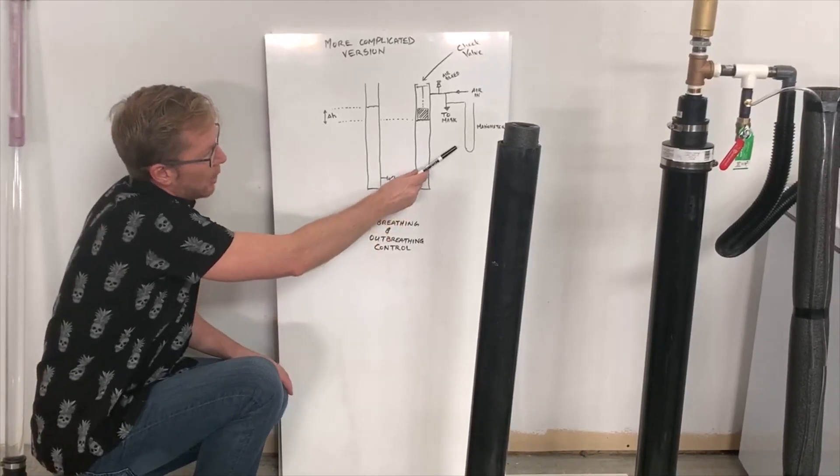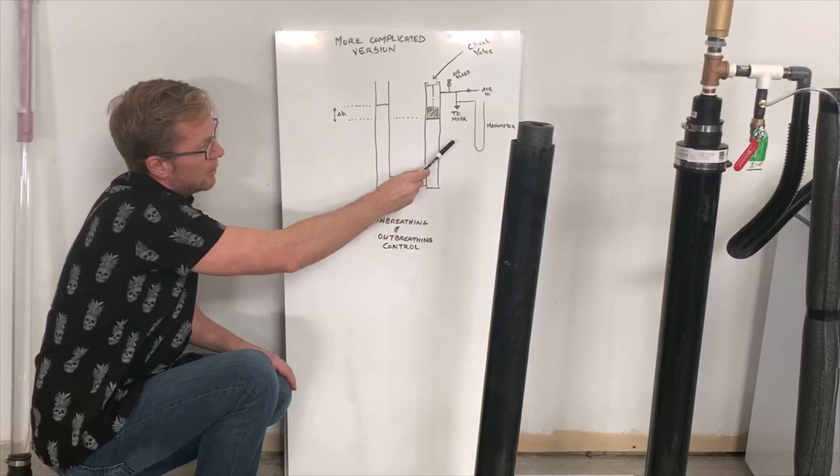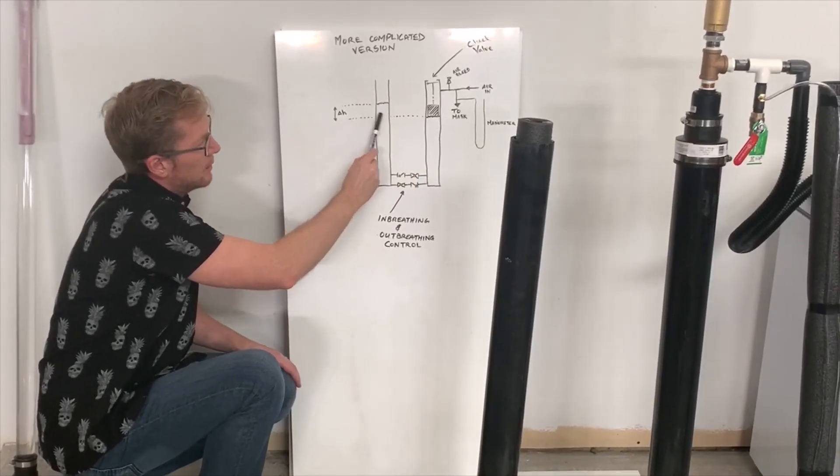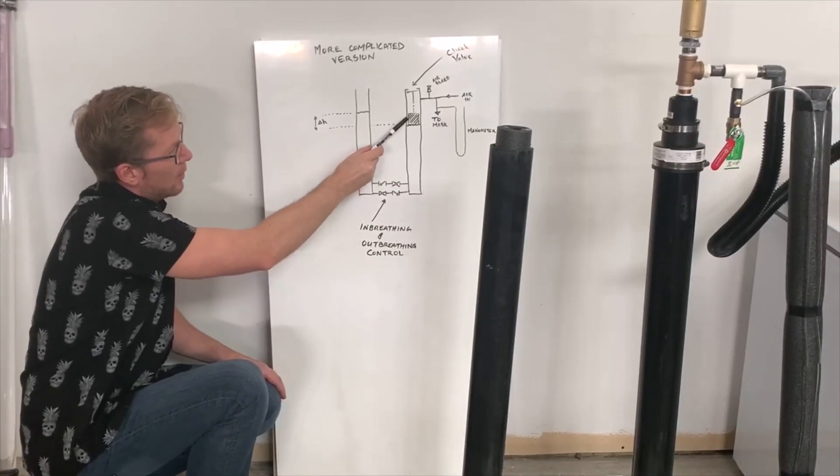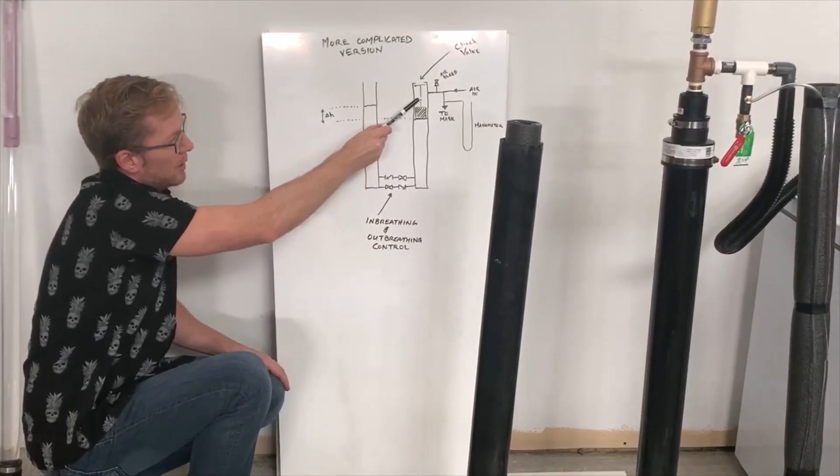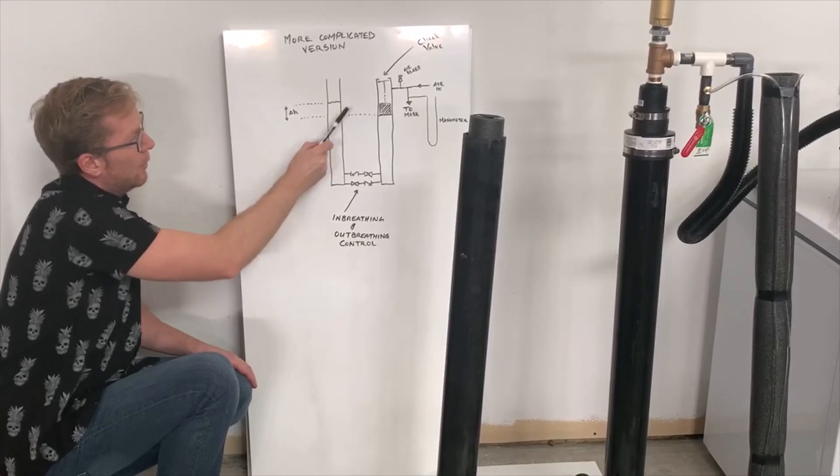We added a manometer to confirm that the pressure at the mask corresponds well to the height difference of the water columns. The height difference can be adjusted simply by adjusting the length of the chain on the float.